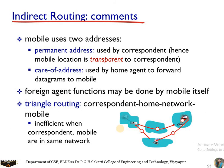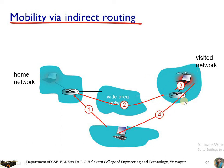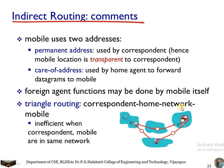The drawback of indirect routing: suppose the correspondent and the mobile node are both on the same visited network. The correspondent still doesn't know the mobile node's address and must contact the home network, which then replies back to the same network. Communication always goes through the home network even when both parties are in the same network, making direct communication impossible. This inefficiency is the main drawback of indirect routing.